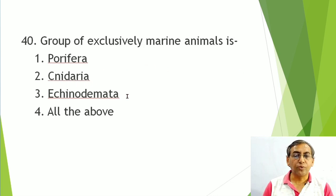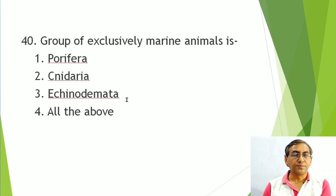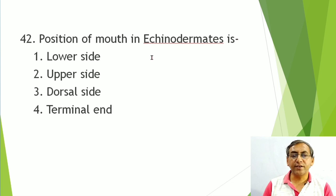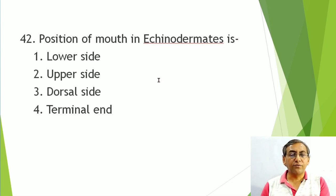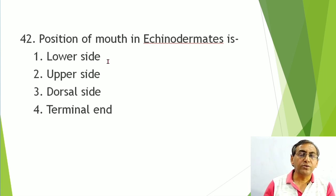Group of exclusively marine animals: Porifera — marine except Spongilla (freshwater); Cnidaria — marine except Hydra (freshwater polyp); Echinodermata — all exclusively marine with no parasitic form. Masticatory organ in Echinodermata: radula is in Mollusca; gizzard and crop in birds and cockroach; Aristotle's lantern is the specific masticatory organ in Echinodermata. Position of mouth: on the lower/ventral side.